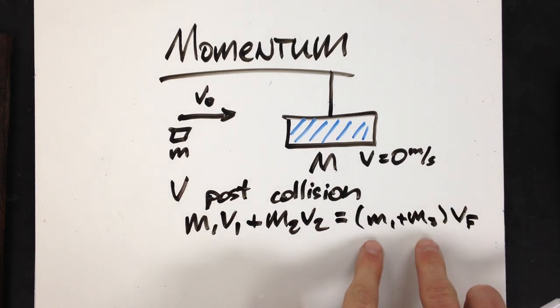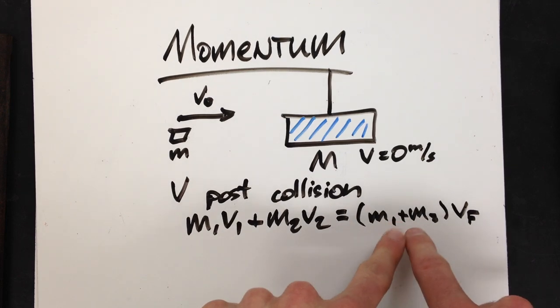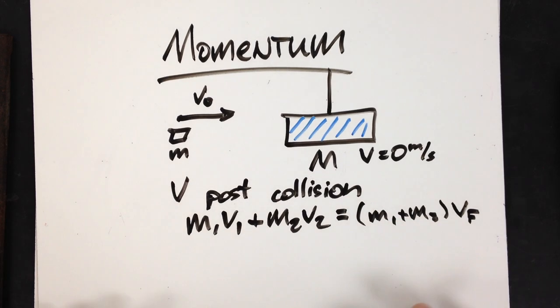So, it's an inelastic collision, which means the two objects are going to hit, stick, and move together. So, they're going to move as one mass. So, I'm going to treat it as one mass.